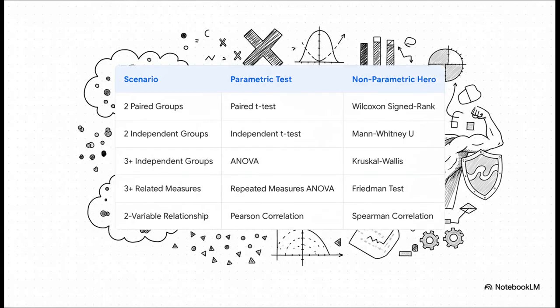And that right there brings us to our complete toolkit. As you can see, for every single common scenario where you'd normally use a parametric test, there's a robust, reliable, non-parametric counterpart waiting for you. The big takeaway here isn't that one type is better than the other, but that you have a choice. You can now pick the right tool for the job. The tool that actually respects the true nature of your data.